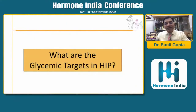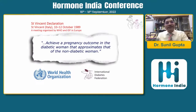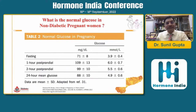When we talk about management, first we should know about glycemic targets. Almost 30 years ago, St. Vincent's declaration said to achieve pregnancy outcomes in a diabetic mother that approximate those of the non-diabetic woman. Let us understand what the normal blood glucose is in non-diabetic pregnancy. This is CGM data. The fasting never exceeds around 70s; one-hour mean is 109, two-hour is 99, and 24-hour average is around 88.